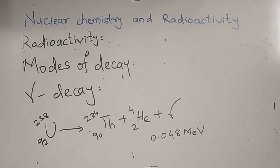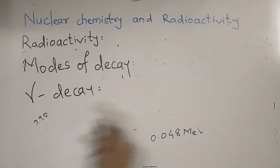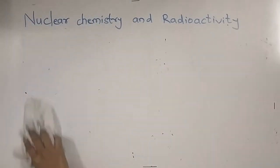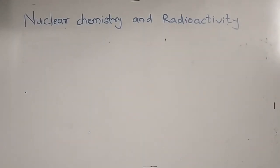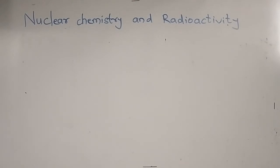Just as we balance chemical reactions, we must similarly balance nuclear reactions. So it is all about radioactivity — what is radioactivity, expression of decay constant, half-life period expression, and modes of decay: alpha, beta, and gamma radiations. Radioactivity is the spontaneous emission of radiation from an unstable nucleus.